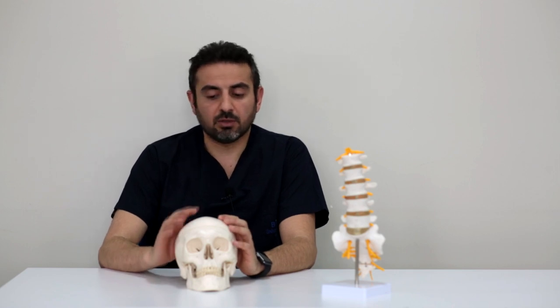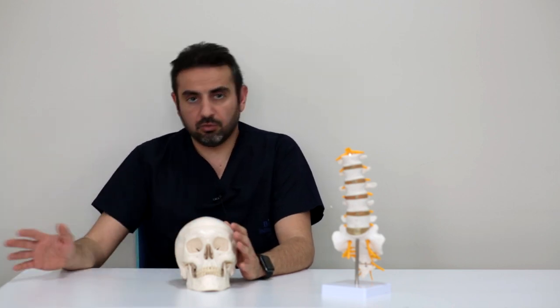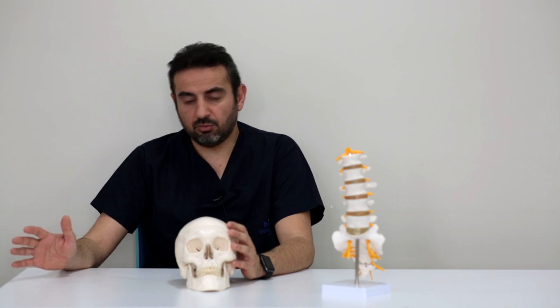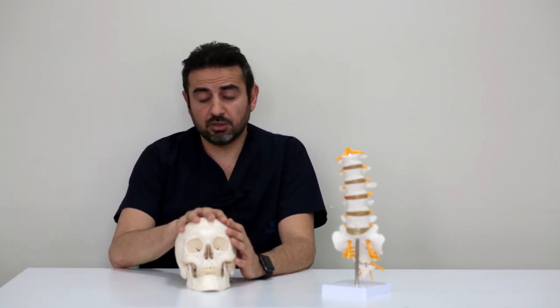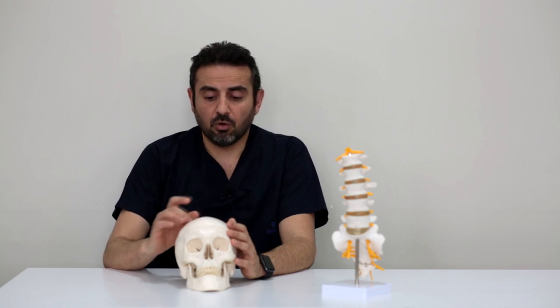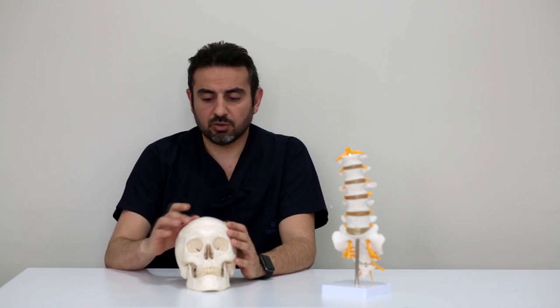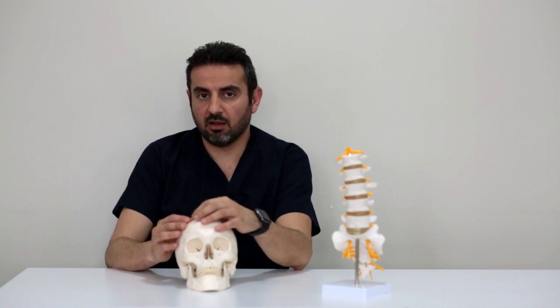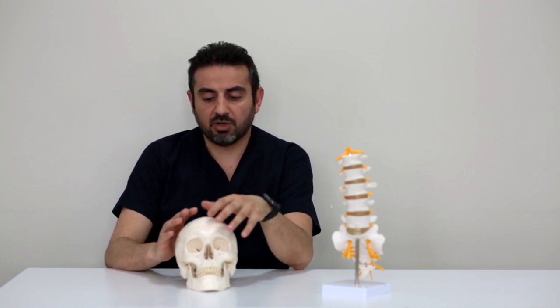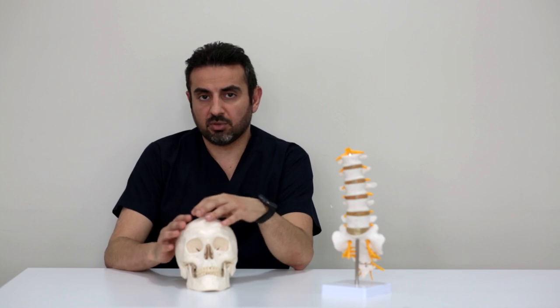There are some nuances regarding this treatment. First of all, we cannot drain all the fluid to the peritoneum—we will decrease the pressure in the brain, which will not be good. For that reason, most shunts have this protection system in it called a valve that operates based on the pressure.